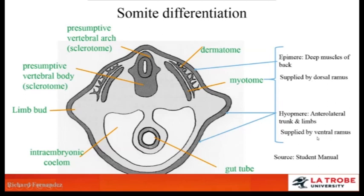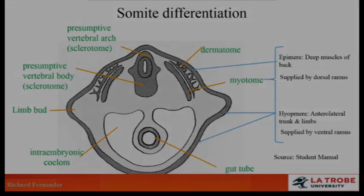An easy way to recall the hypomere and the epimere is to think about hugs — there's the H in hypomere. When you hug someone, there's contact between your anterolateral trunk and your limbs, which are all part of the hypomere.